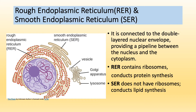Rough endoplasmic reticulum and smooth endoplasmic reticulum: the endoplasmic reticulum is a network of membrane-enclosed sacs in a cell that package and transport materials for cellular growth and other functions. There are only two types — smooth and rough. If there are ribosomes attached, we call it rough endoplasmic reticulum; if there are no ribosomes attached, we call it smooth endoplasmic reticulum. The rough ER is attached to or closer to the nucleus and conducts protein synthesis because it has ribosomes. The smooth ER does not have ribosomes, so it doesn't produce proteins; instead, it conducts lipid synthesis.